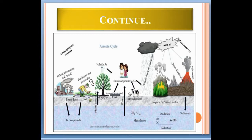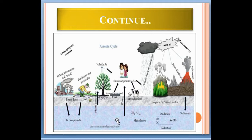Farmers are using fertilizers and pesticides on crops, and these fertilizers contain arsenic elements, which pollute the soil and ultimately the groundwater. Groundwater is actually the main source of arsenic pollution.